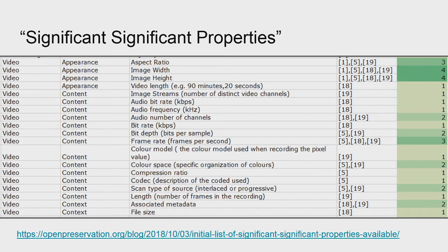This is the list of significant properties from the National Archives of the Netherlands. I'll walk through this spreadsheet — it's an extract of a much longer spreadsheet covering all different content types; this portion is just for video. The second column maps to significant properties from the JISC report, with numbers mapping to other projects including the Arts and Humanities Data Service, Archivematica, and the JISC report. The final column indicates how important each property is.